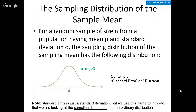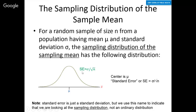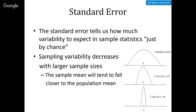So just to summarize: for a random sample of size N, the sampling distribution of the mean will have the same mean as the population, a standard deviation equal to the standard error — the population standard deviation divided by the square root of the sample size — and for a large enough sample size, it'll be normally distributed. The standard error, by dividing by the square root of N, reflects the fact that the larger your sample size, the less variability there is in these means.